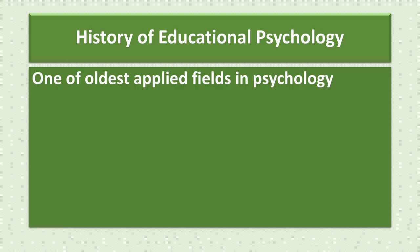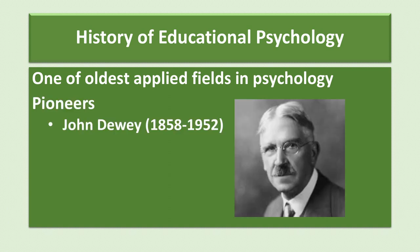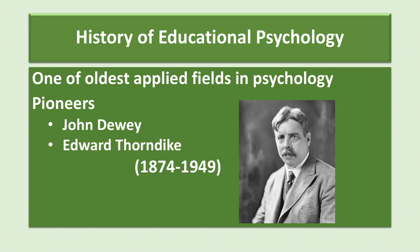Educational psychology is one of the oldest fields within the discipline of psychology, as some of the earliest contributors investigated the principles of learning and teaching. Two of the earliest pioneers were John Dewey, who lived from 1858 to 1952, and Edward Thorndike, who lived from 1874 to 1949. These two researchers had very different ideas about how research and practice in the field should proceed.